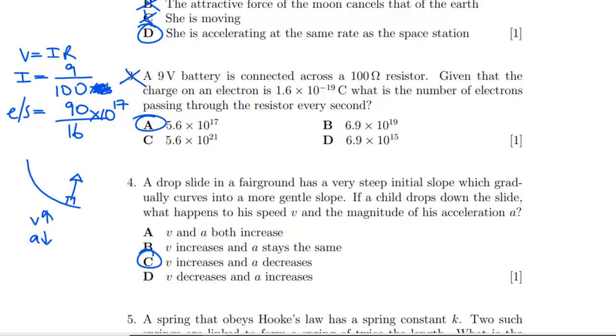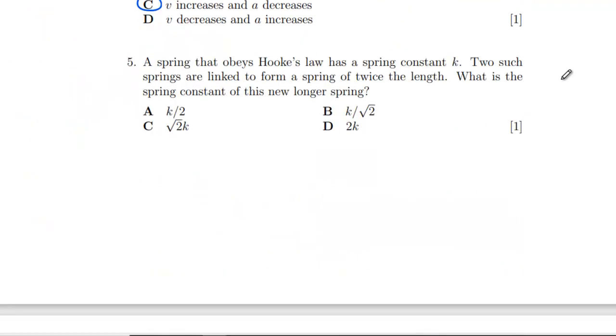A spring that obeys Hooke's law has a spring constant of k. Two such springs are linked to form a spring of twice the length. What is the spring constant of this new longer spring? For the first case we've got F equals kx, that's our Hooke's law statement. For the two spring combo, for the same force and a different force constant, we're going to get twice the extension because each spring will extend by amount x. Equating these, our new spring constant is going to be half of the original spring constant, which is A.